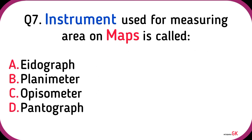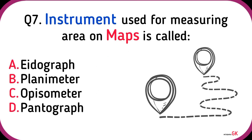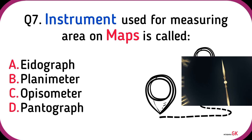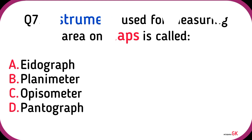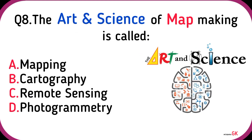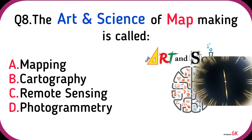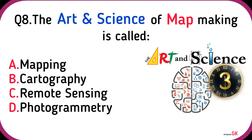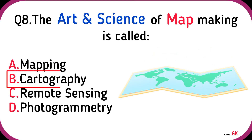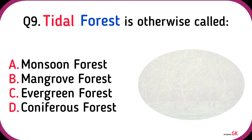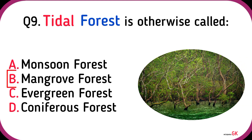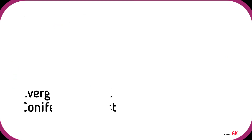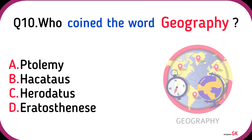The instrument used for measuring area on maps is called a planimeter. The art and science of map making is called cartography. Tidal forest is otherwise called mangrove forests.